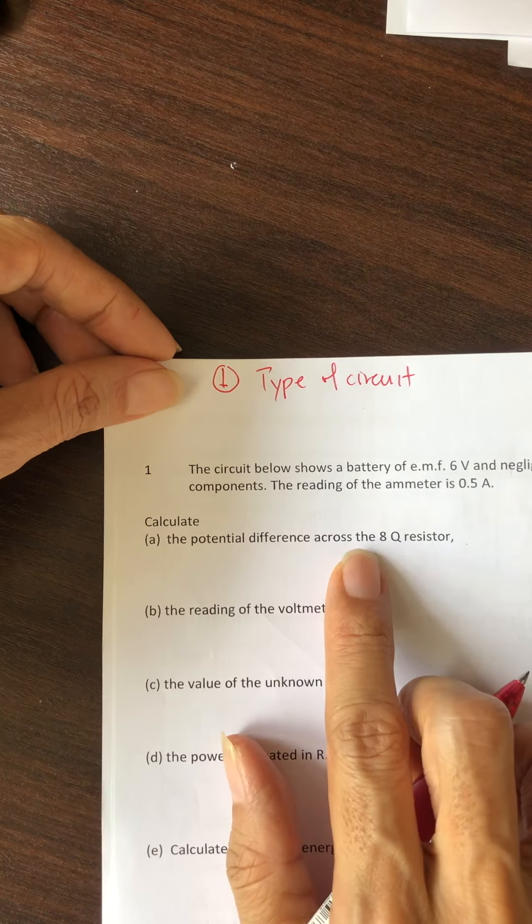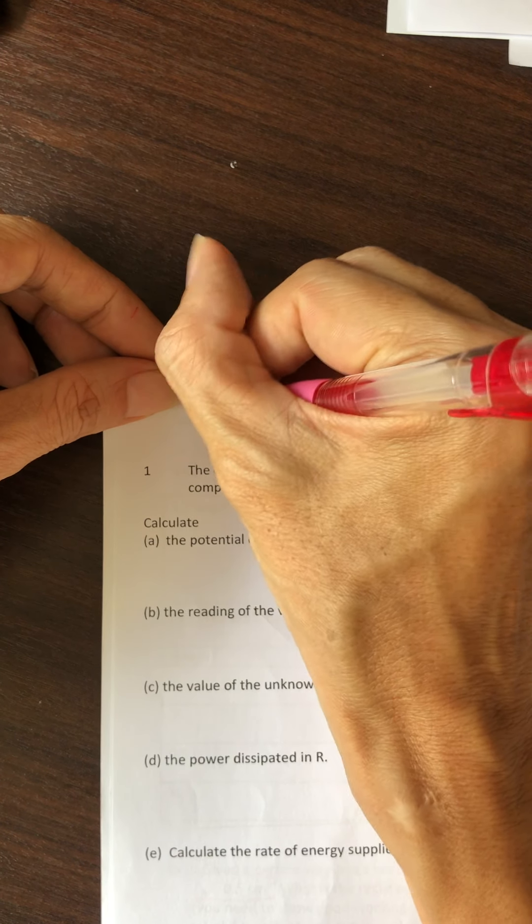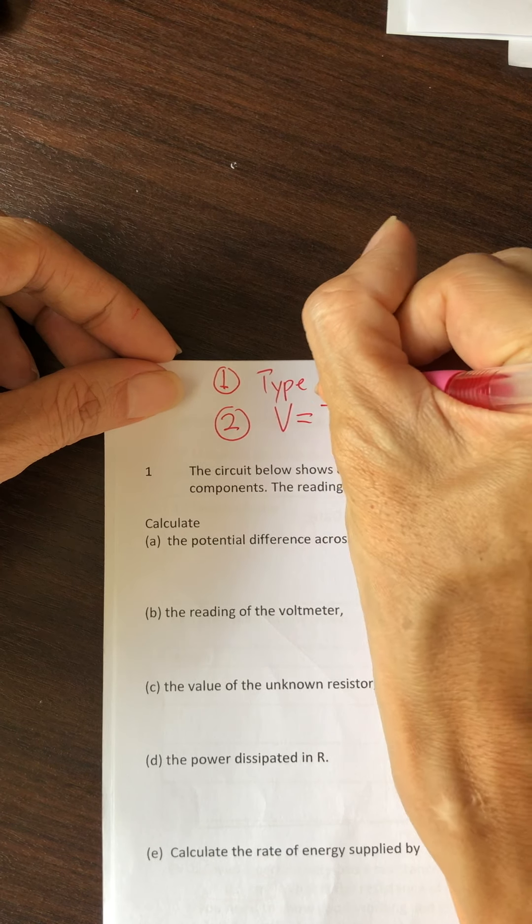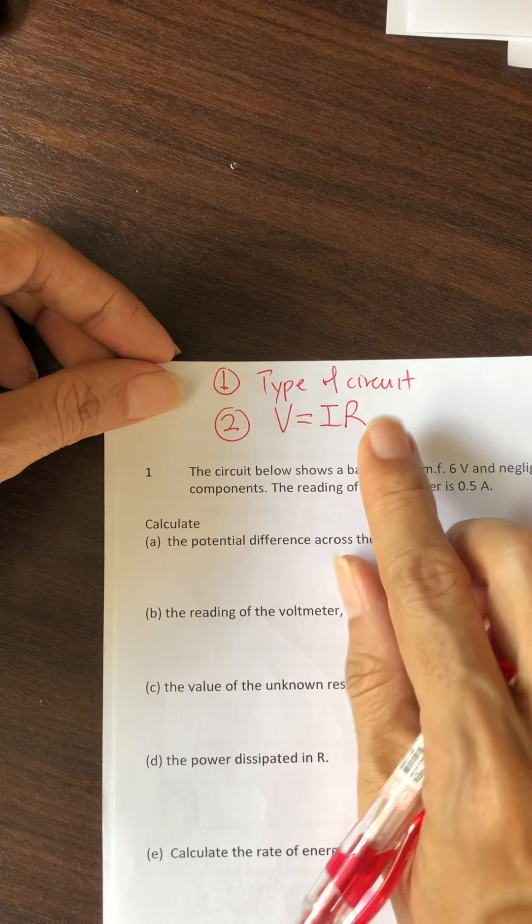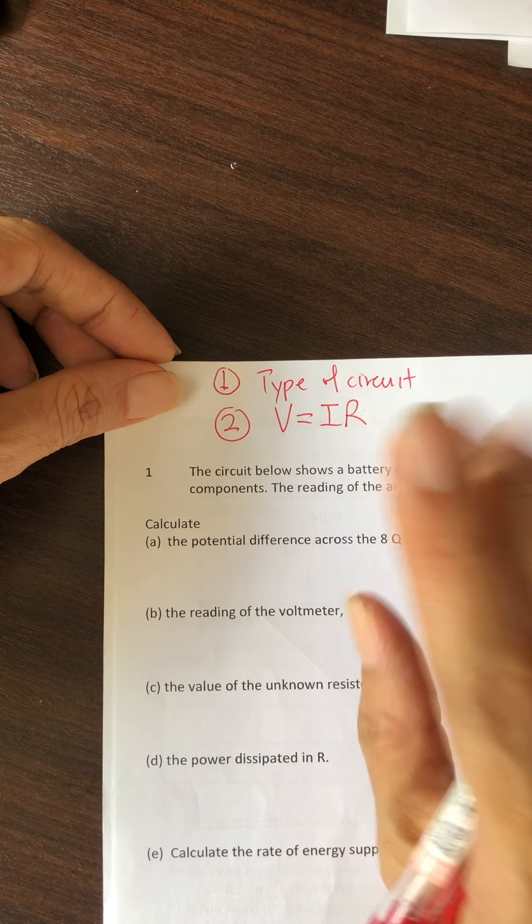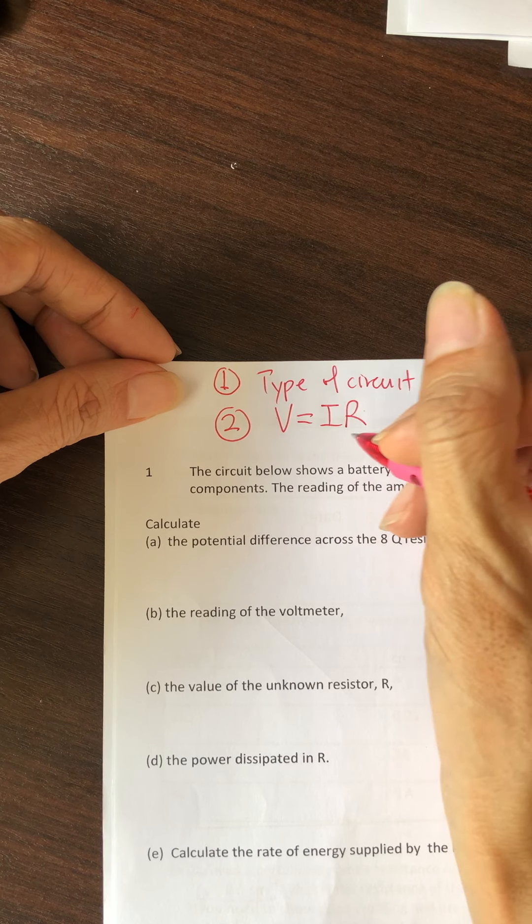When you're reading the question and they ask you to calculate the potential difference or the reading of a voltmeter, try using V equals IR - it normally works. If you know the I and the R, you can find V.